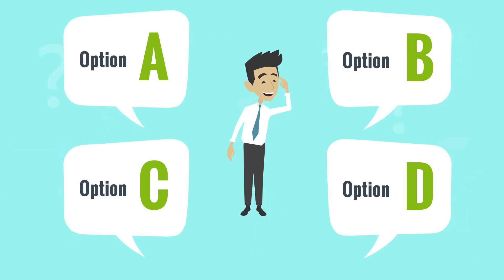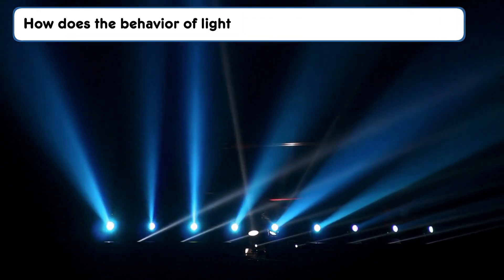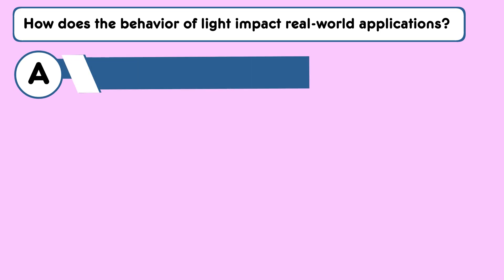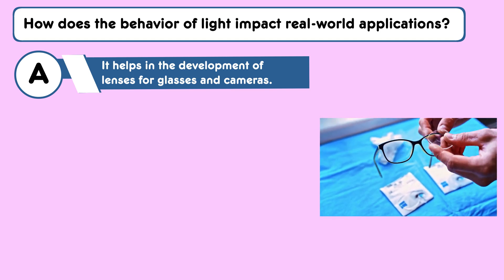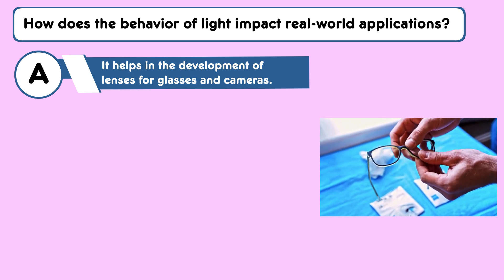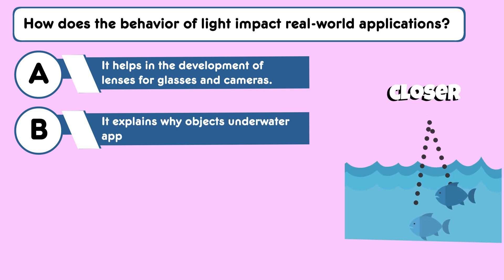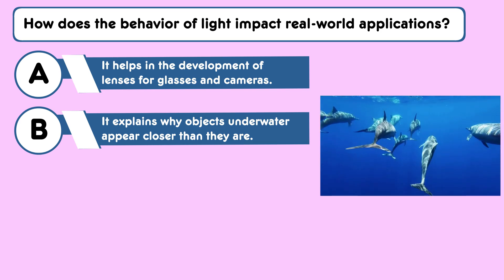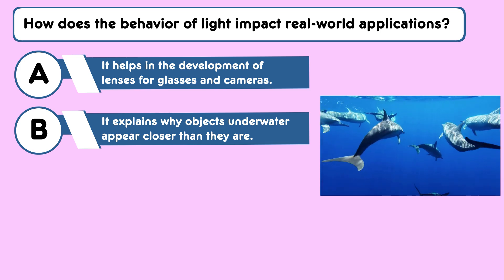Go ahead and choose your answers and proceed to Part B. Here's your question for Part B: based on your understanding from Part A, how does the behavior of light impact real-world applications? Go ahead and select two correct answers. Answer choice A: it helps in the development of lenses for glasses and cameras. Quick tip — think about the role of refraction in optical instruments. How does understanding light behavior help in designing lenses? Answer choice B: it explains why objects underwater appear closer than they are. Quick tip — reflect on the practical effects of refraction in everyday observations. How does this knowledge help us understand the apparent position of underwater objects?